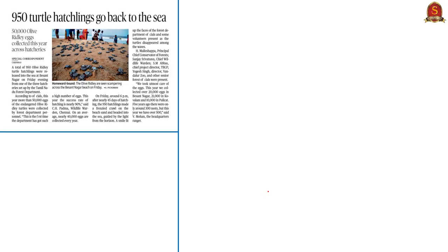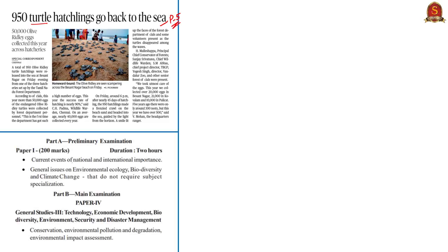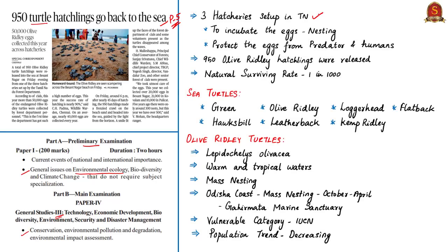Moving on to the next article which talks about the Olive Ridley turtles, which appeared on page 5 of Chennai edition only. This information is relevant under the preliminary exam syllabus in General Issues on Environmental Ecology, and in the main syllabus Paper 3 under Conservation and Environmental Pollution. The article states that three hatcheries were set up by the Tamil Nadu Forest Department for the purpose of incubation of eggs from the nesting of Olive Ridley sea turtles, to protect the eggs from predators and humans. 950 hatchlings were released from the Besanagar beach in Chennai into the sea.